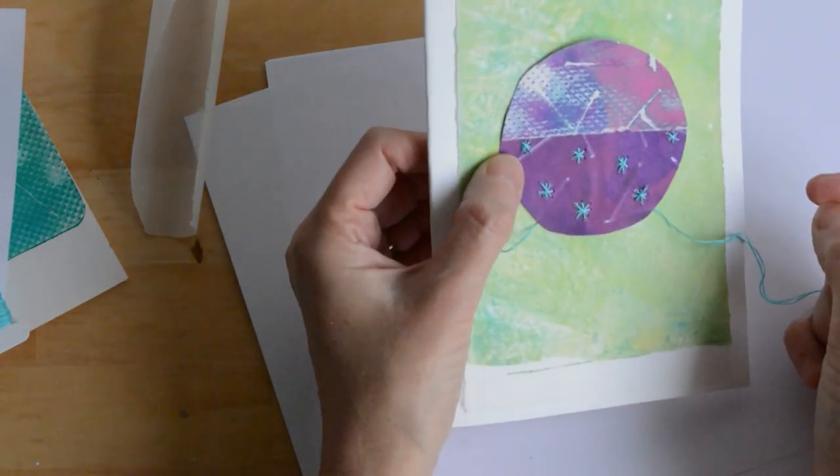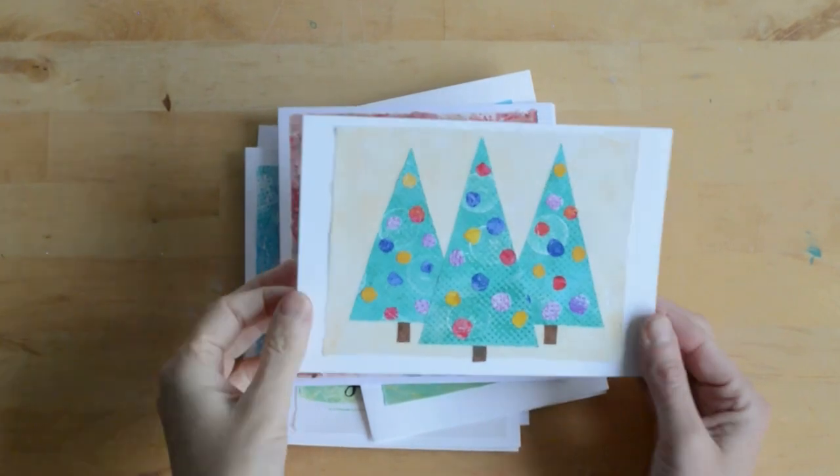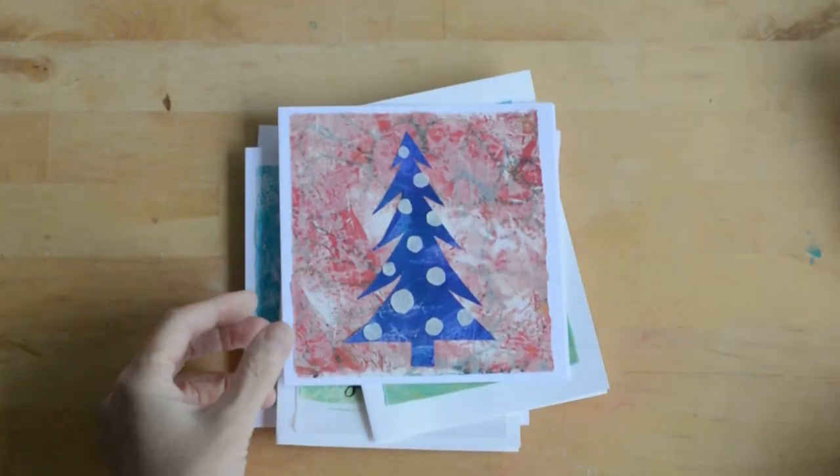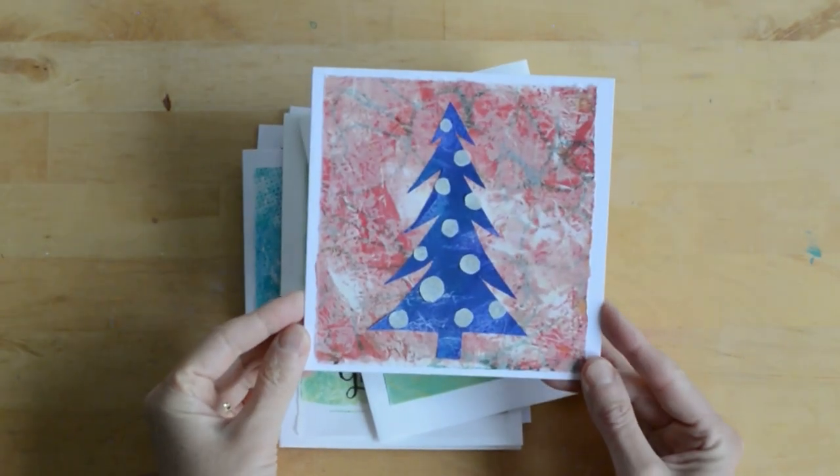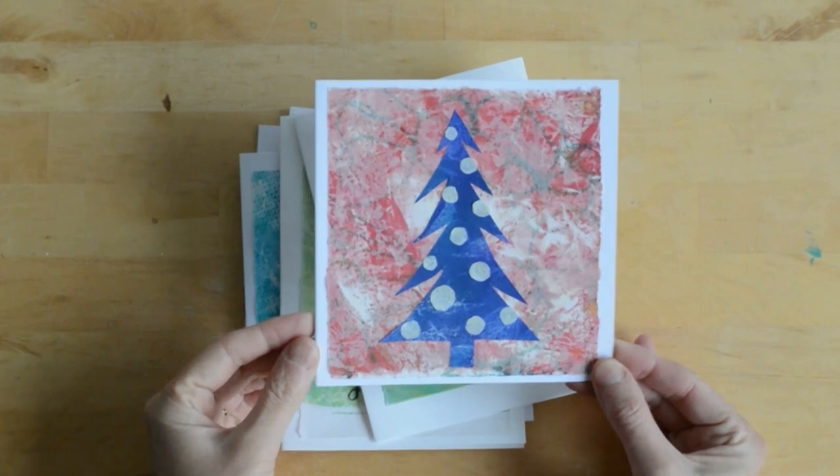So let me show you a few cards I've made. These are simple triangles cut out and some bauble shapes added from different prints. This is my favorite—I love the background of this particular tree.